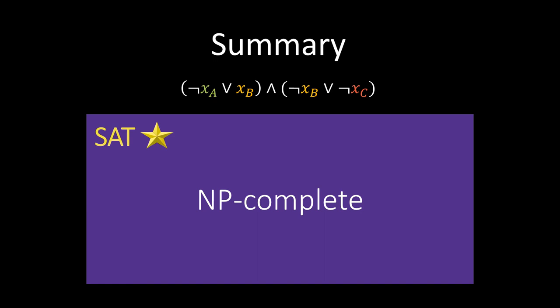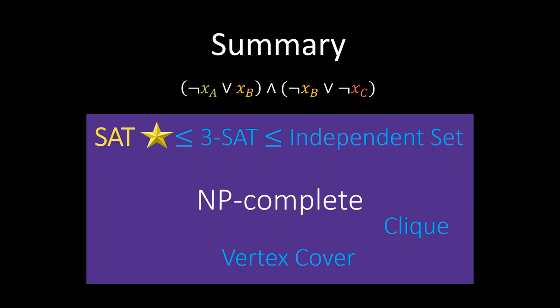We then reduced SAT to 3-SAT, its variant where clauses have size exactly 3, which is also NP-complete. Finally, we reduced 3-SAT to independent set, showing it is also NP-complete. Many other reductions can be constructed, showing the completeness of a plethora of other problems, like clique and vertex cover. This is a very vast field, so we have only scratched the surface. In fact, thousands of interesting problems in many different areas are NP-complete. It is not unthinkable that for each letter of the English alphabet, one can find an NP-complete problem starting with that letter. So here are a few examples to spark your curiosity.